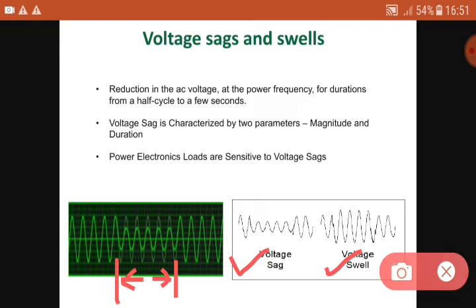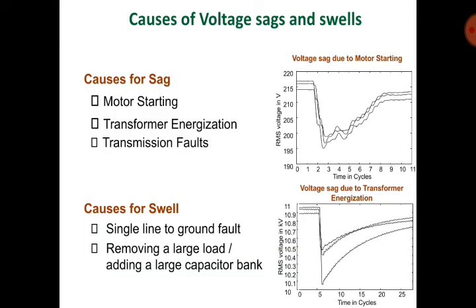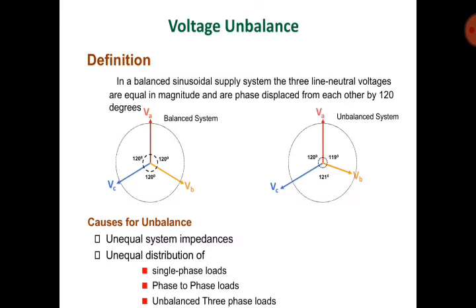Power electronics loads are sensitive to voltage sag. Cases for voltage sag include: motor starting, transformer energization, and transmission line faults. Cases for voltage swell include: single line-to-ground fault, removing a large load, or adding a large capacitor bank.